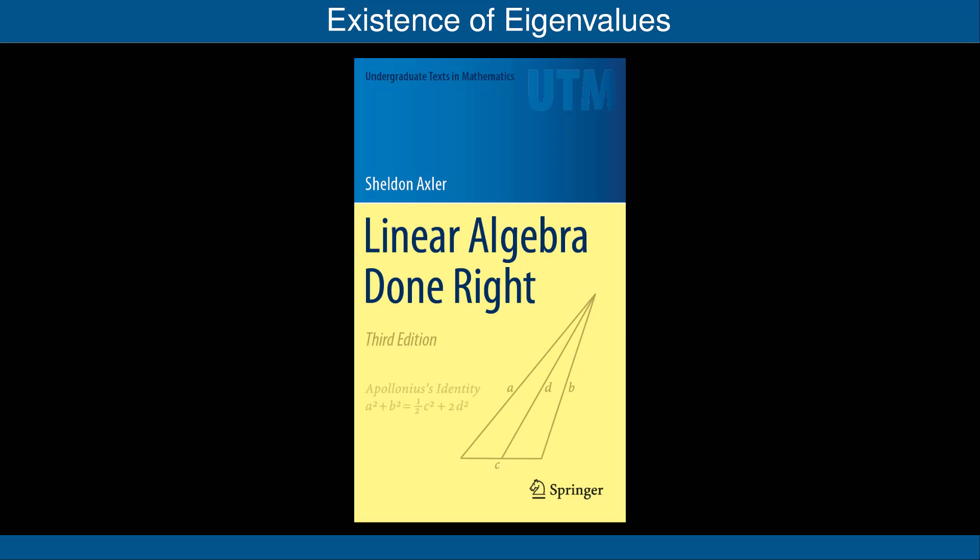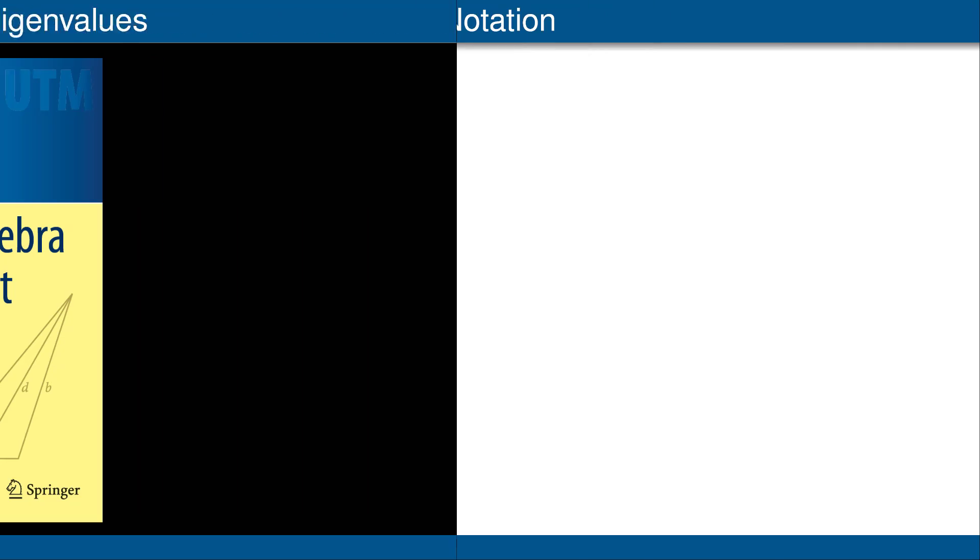This video focuses on the existence of eigenvalues. Let's quickly review our notation and terminology. F denotes either the scalar field R of real numbers or the scalar field C of complex numbers. We let V denote a vector space over F. The word operator means a linear map from a vector space to itself. And L of V means L of V comma V, the set of operators from V to V.